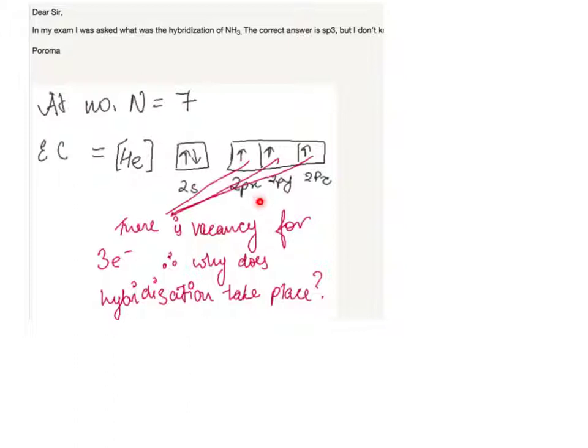There is one fundamental problem with using this idea for nitrogen. Look at these. These are 2px, 2py, 2pz orbitals, atomic orbitals. As you know, they are mutually perpendicular to each other. And therefore, if you actually looked at the structure of ammonia, you should find that the hydrogen-nitrogen-hydrogen bond angle should be 90 degrees.